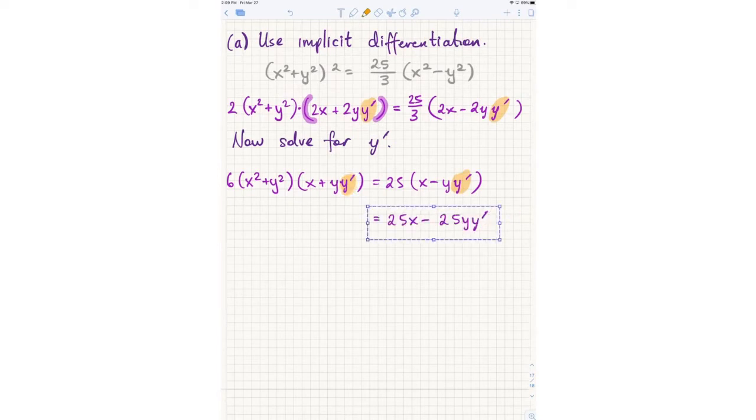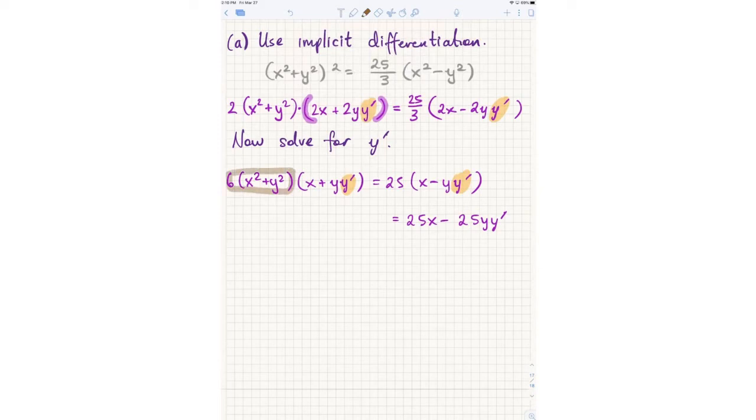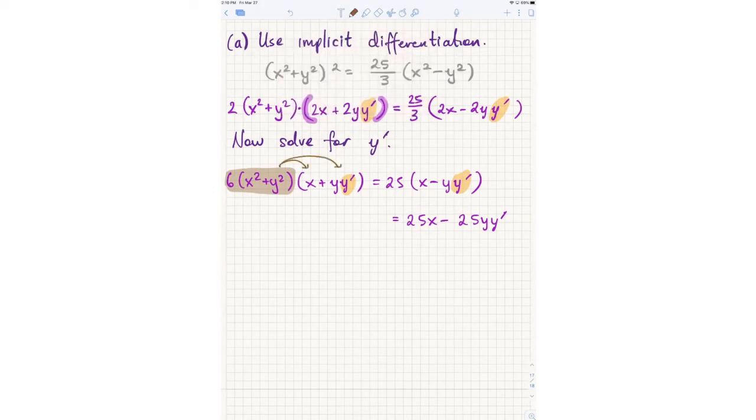I do need to expand both sides. On the right side, I expand, and I get 25x - 25yy', right? Pretty simple. On the left-hand side, though, let's be careful. Don't do more work than you really have to. What I mean by that is, I only really need to separate the y' from everything. I just need terms with y' separated from terms without y'.